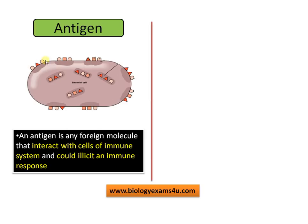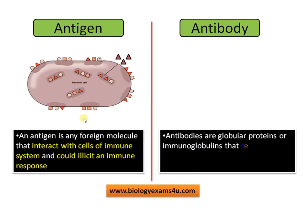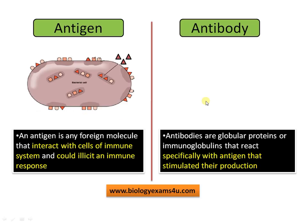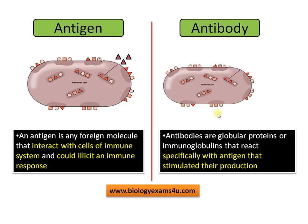Suppose this is a bacterium — there are many antigenic determinants on the surface of the bacterium. On the other hand, antibodies are globular proteins or immunoglobulins that react specifically with the antigen that stimulated their production. Antibodies are specifically targeted against a specific antigenic determinant.